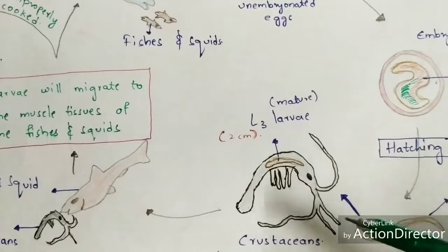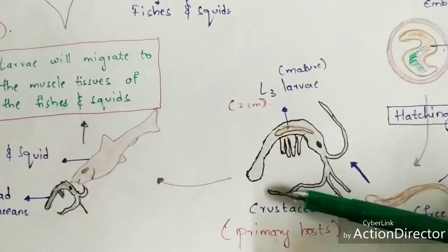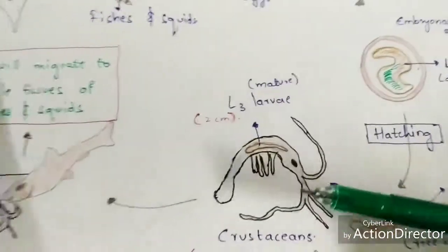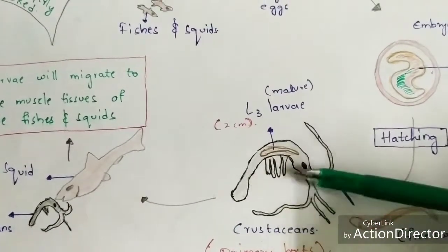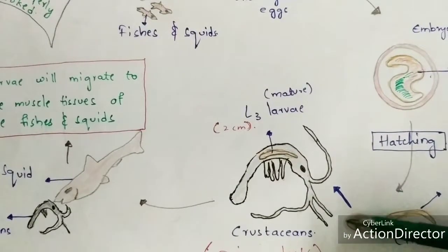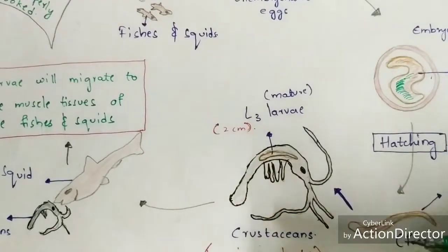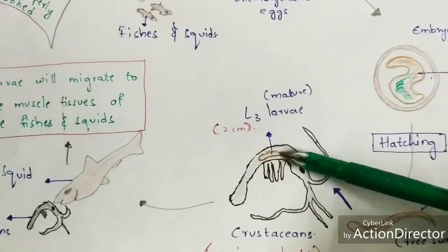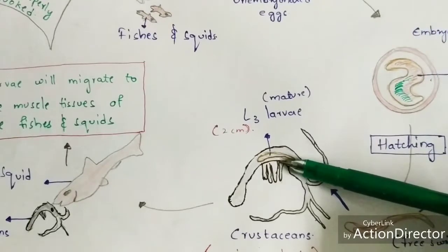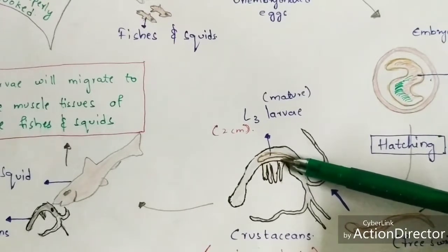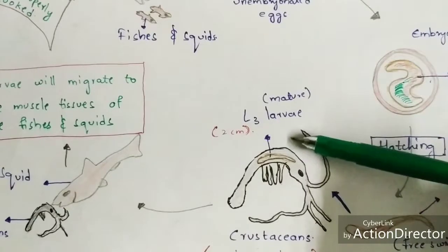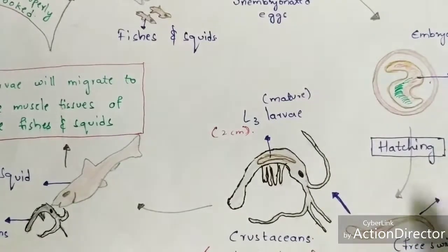As the L2 larva swims freely, it gets consumed by crustaceans - such as crabs, lobsters, crayfishes, and krill - which are also present in the water. The crustaceans act as the primary hosts because they carry the L2 larva. The L2 larva enters the gut of the crustaceans and feeds on the material inside. As it feeds, it matures and transforms into L3 larva.